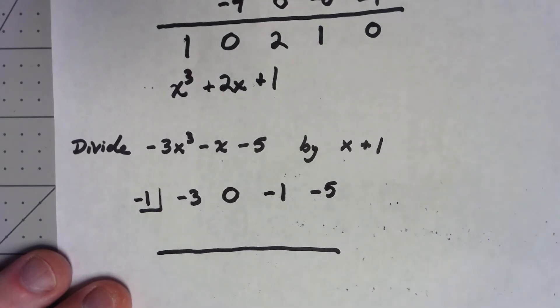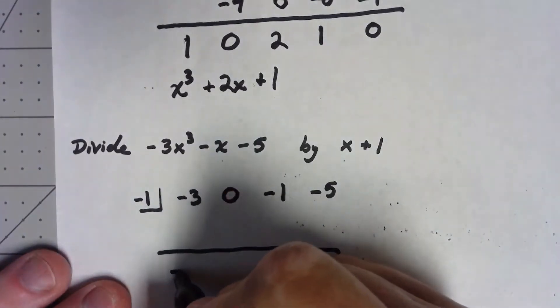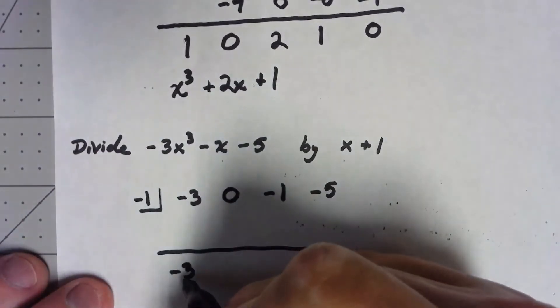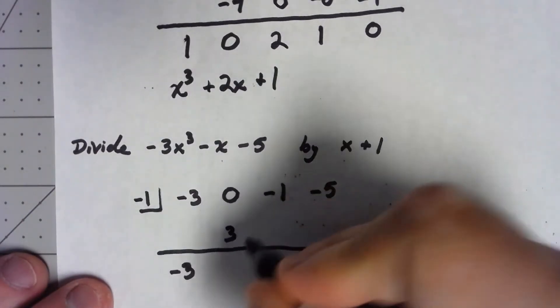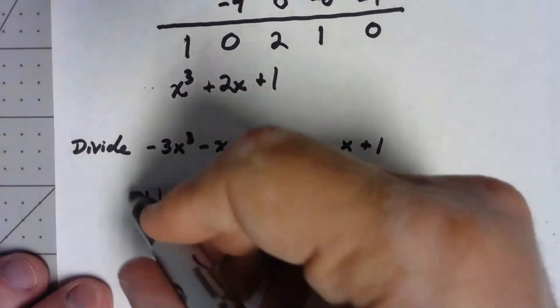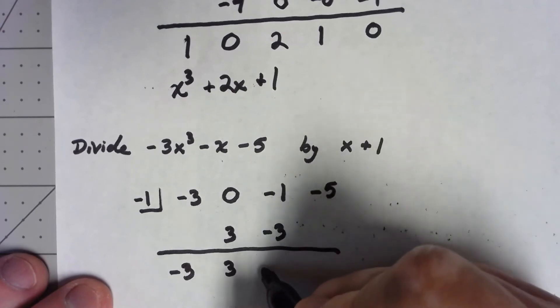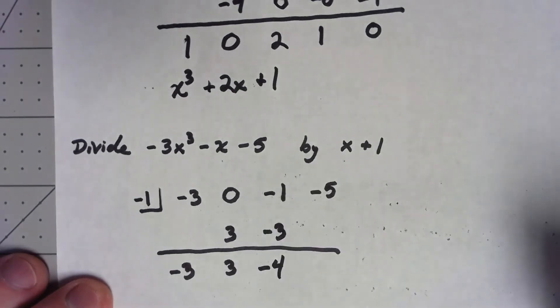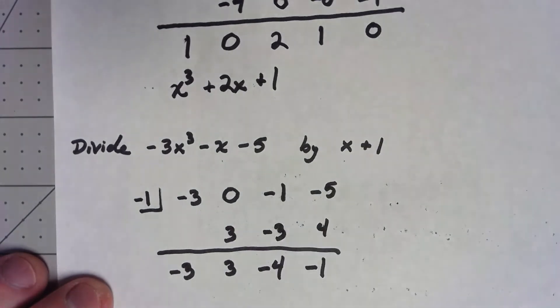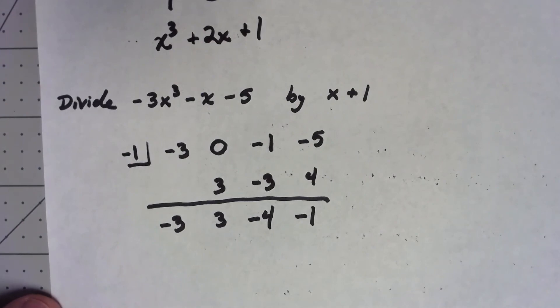Then the first step, bring the first number straight down. So my negative 3 comes straight down. And then, repeatedly, we multiply by the number in the box, then add. Negative 1 times negative 3 is a positive 3. We add and get a positive 3. Negative 1 times 3 is a negative 3. We add, we get a negative 4. Negative 1 times negative 4 is positive 4. We add, we get a negative 1.